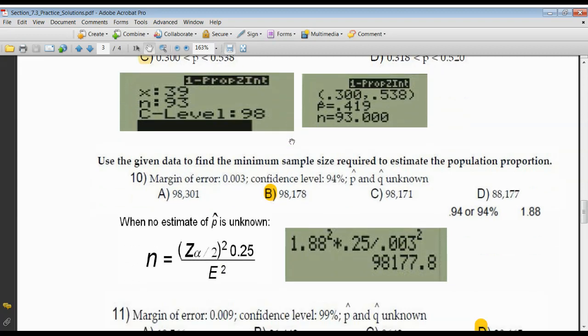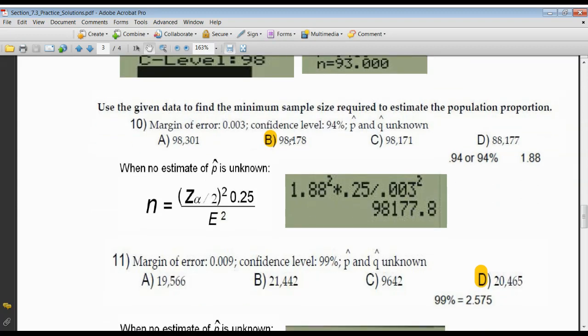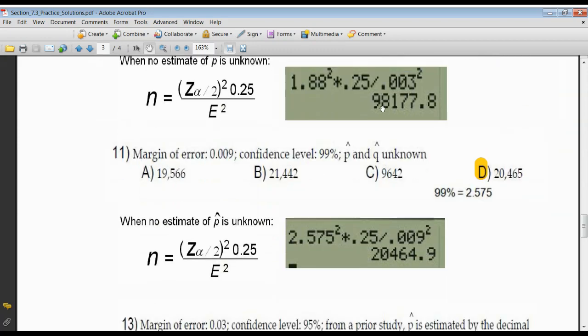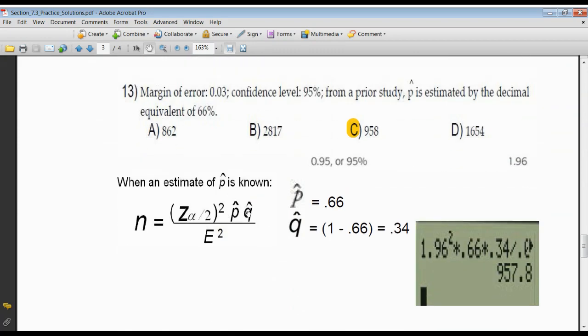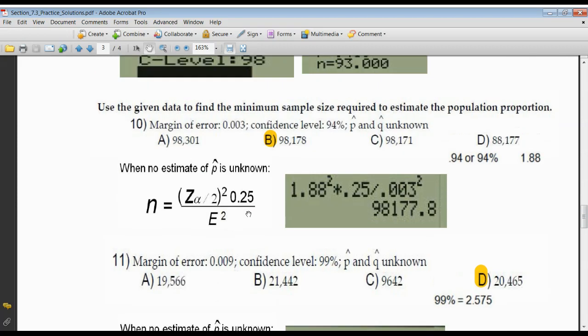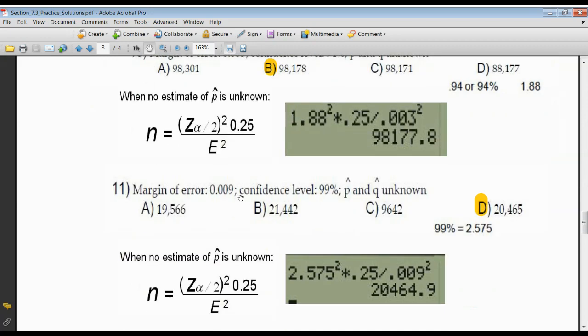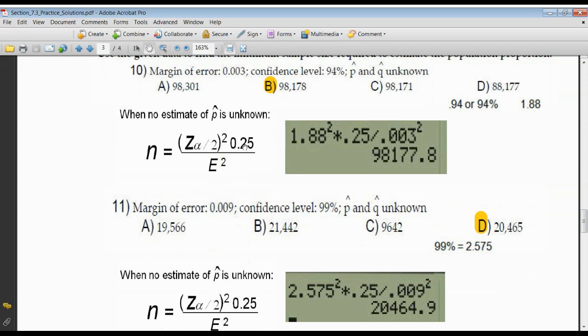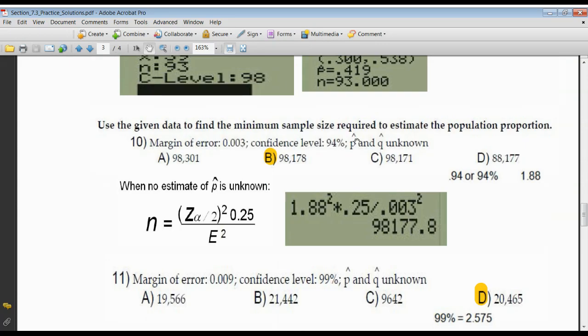We start out finding error, then we find the confidence interval. And then, the last thing is to find the sample size. Now, there's two formulas. Actually, they're one of the same. One where P and Q hat are unknown. If P hat and Q hat are unknown, the formula tells me to multiply P hat times Q hat. Well, if they're unknown, what I'm going to do is use P hat to be 0.5 and Q hat to be 0.5. P hat times Q hat is going to end up to be always 0.25 when you don't know. When you're not given P hat and Q hat, they're unknown. You use 0.5 for both of them, and when you multiply them, you always get 0.25.